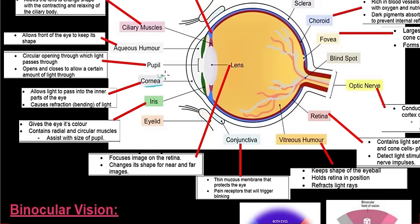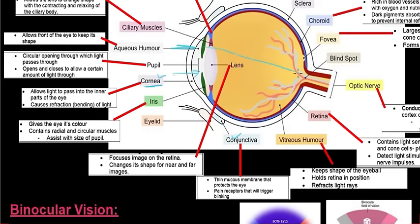The next one is the cornea, which sits on the front of the eye. This is the only part that can be transplanted without an exact blood donor match because there are no blood vessels in it. It allows light to pass into the inner parts of the eye, meaning it is transparent to a degree. It also causes refraction or bending of light, generally directing it towards the retina.